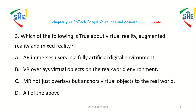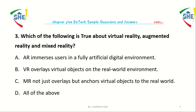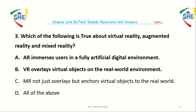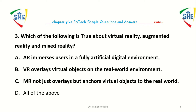Question number 3: Which one of the following is true about virtual reality, augmented reality, and mixed reality? A) Augmented reality immerses users in a fully artificial digital environment. B) Virtual reality overlays virtual objects on the real-world environment. C) Mixed reality is not just overlay but anchors virtual objects to the real world. D) All of the above.